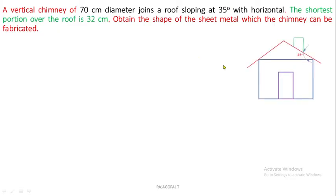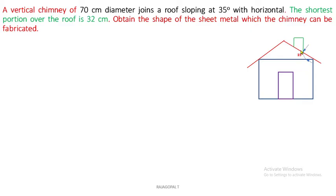First, let's see what this exact practical case is. It is a room where we are having a roof on both sides. In that roof we can see where we are having a chimney — this green line is the chimney. The shortest portion over the roof is 32 centimeter, shown at the cursor position. This is the exact chimney which is on the roof.